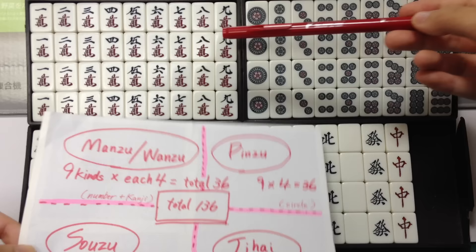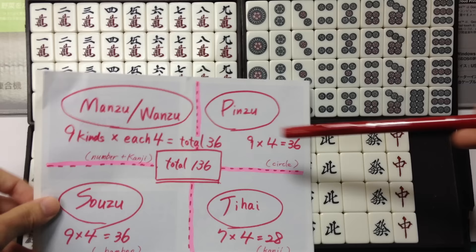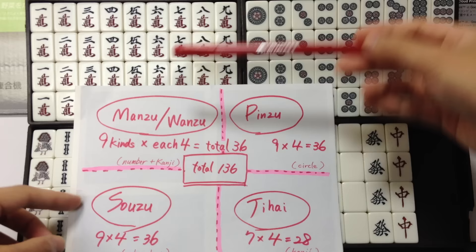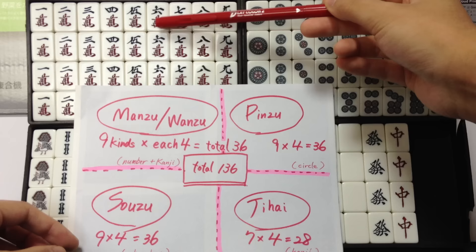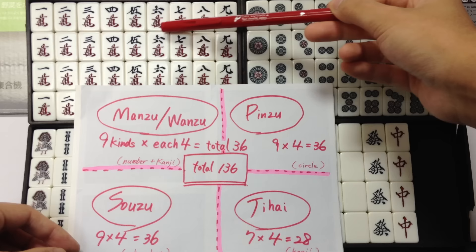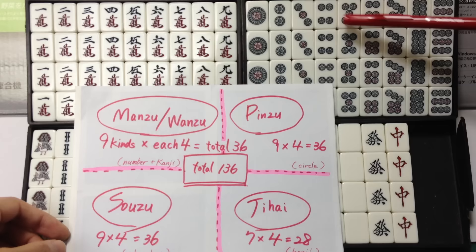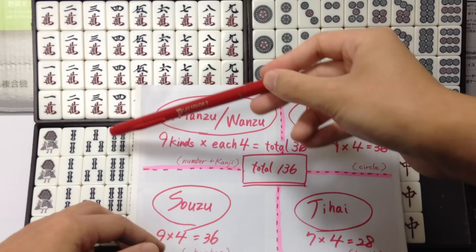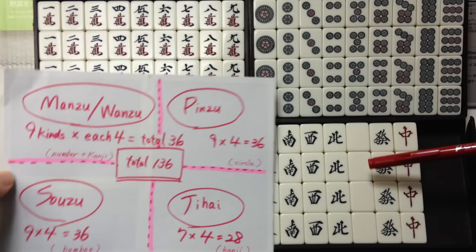Manzu, Pinzu, Sozu, Jihai — total 136. Manzu is number and kanji. This kanji is called Man or Wan. Pinzu is circle. Sozu is bamboo. Jihai is kanji.